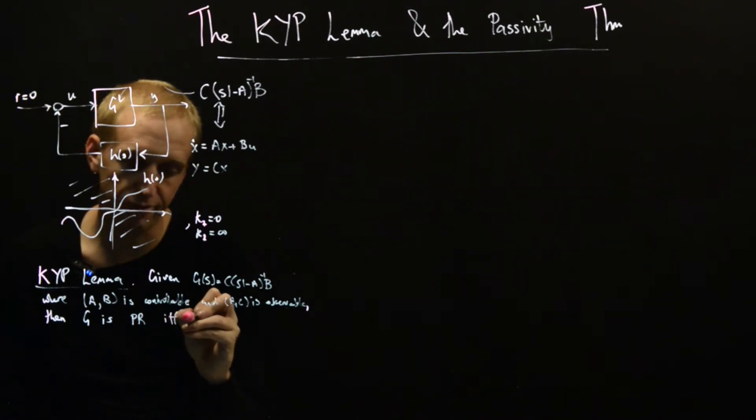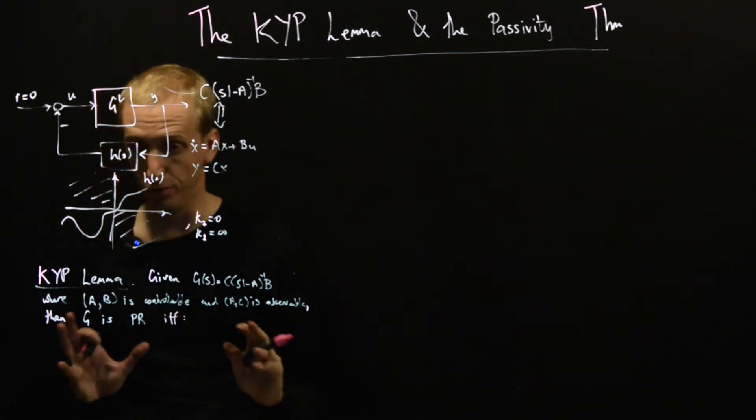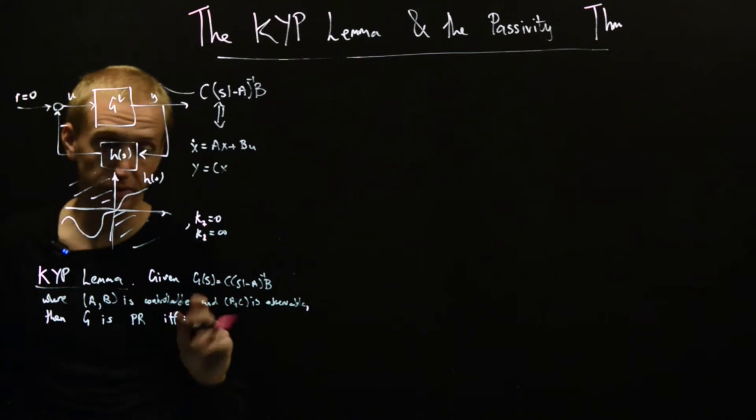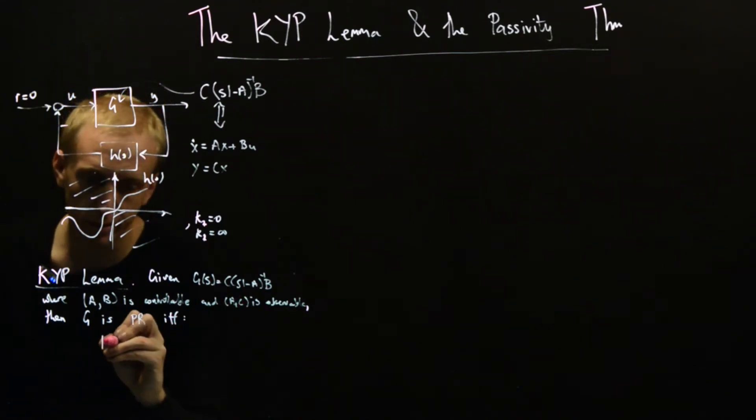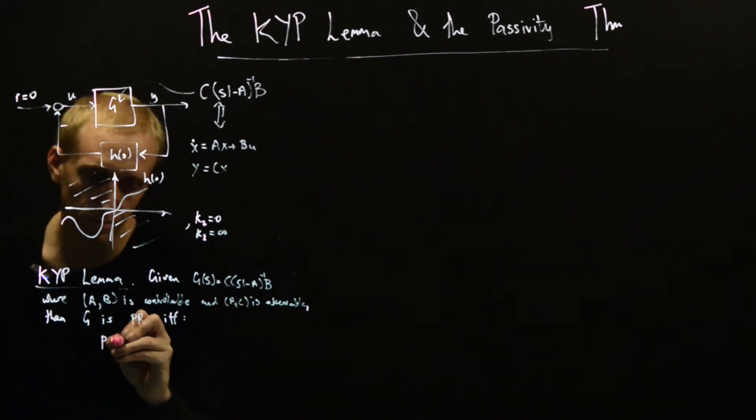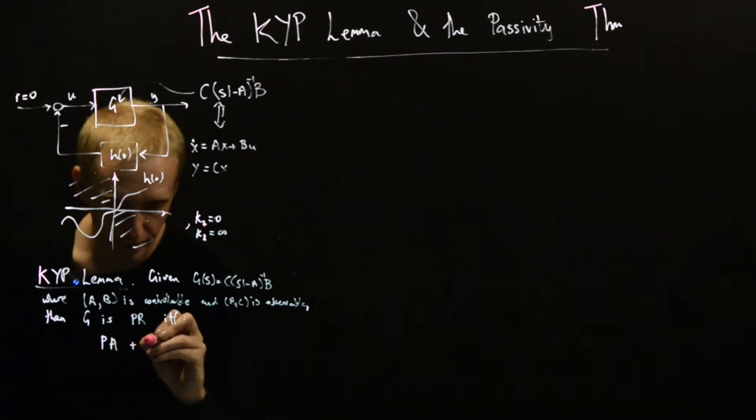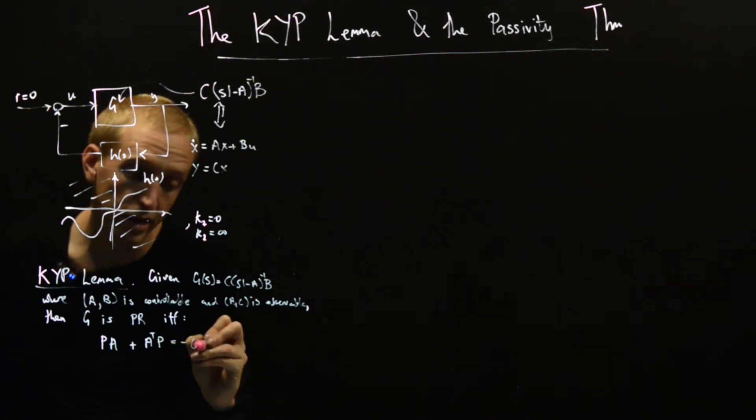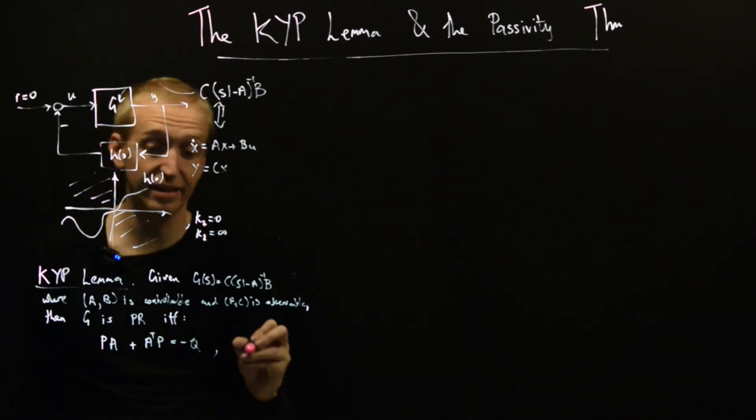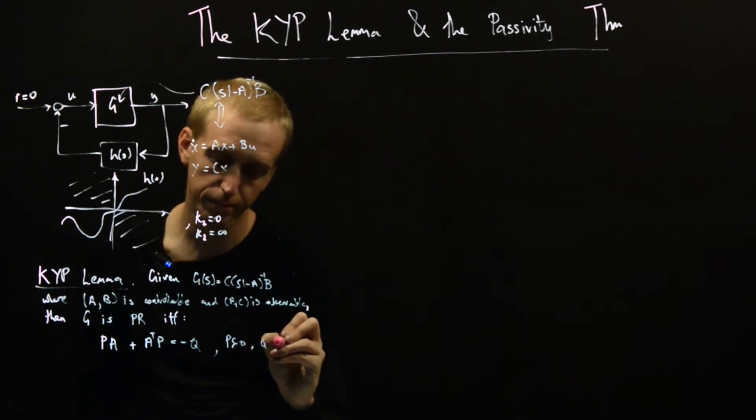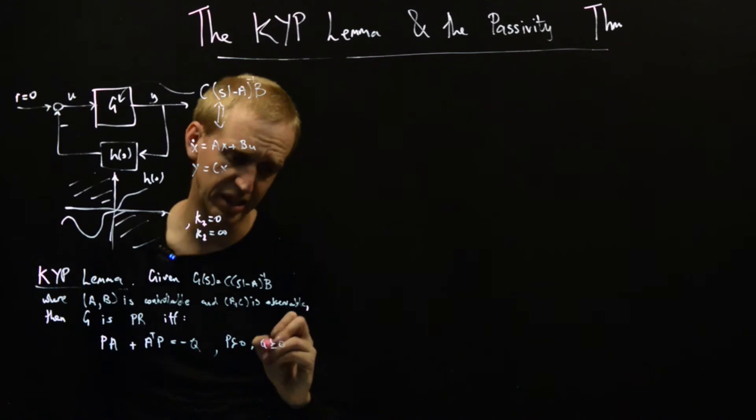Then G is positive real - it belongs to that class which was marginally stable with its Nyquist diagram lying in the closed right half plane - if and only if we have two equations that this must satisfy.